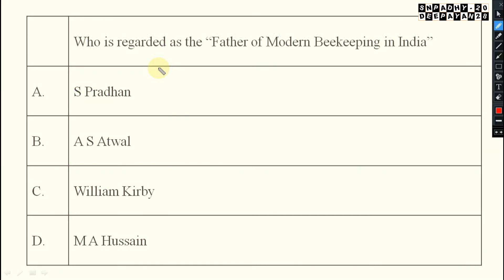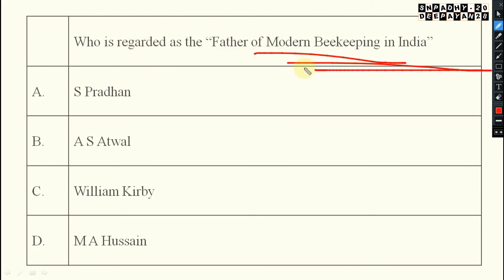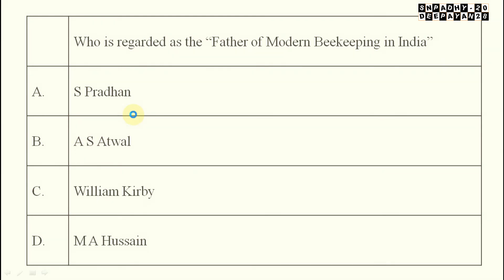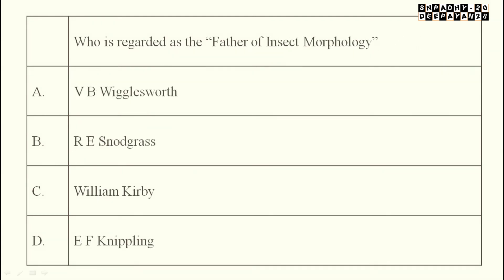Next: who is regarded as the father of modern beekeeping in India? He is A.S. Atwal, because he introduced Apis mellifera into India. Crossbreeding was done between the species, and that was then established in our country.